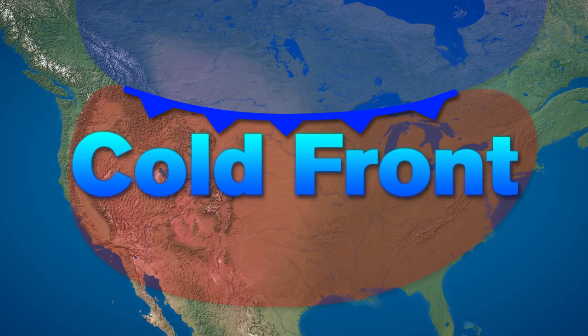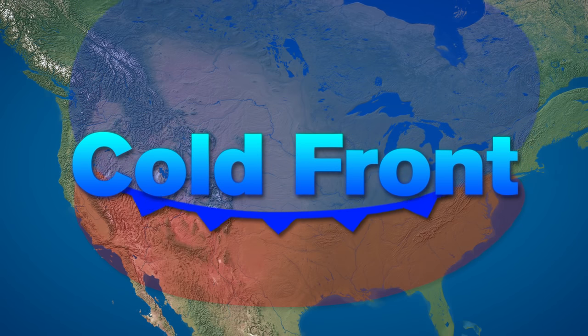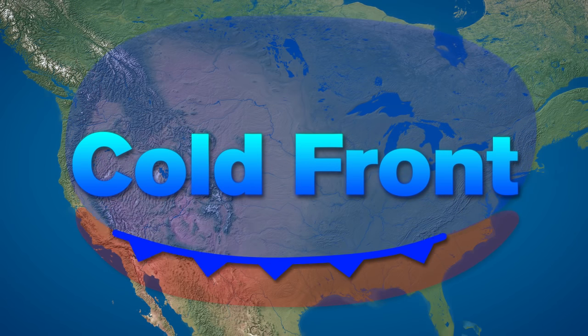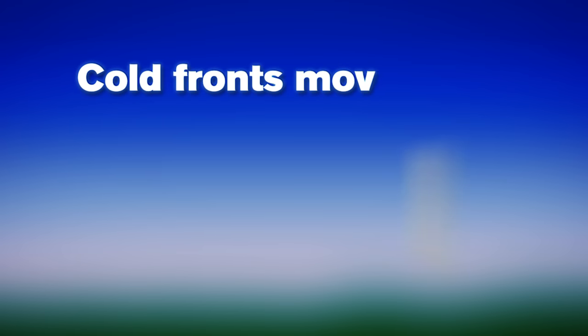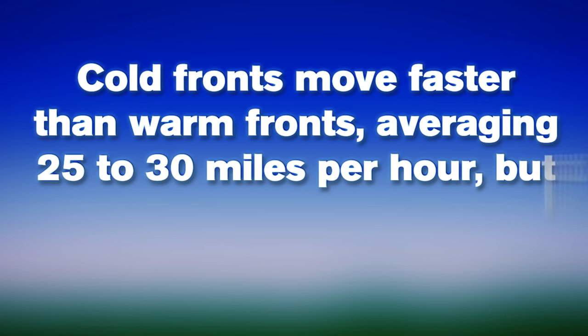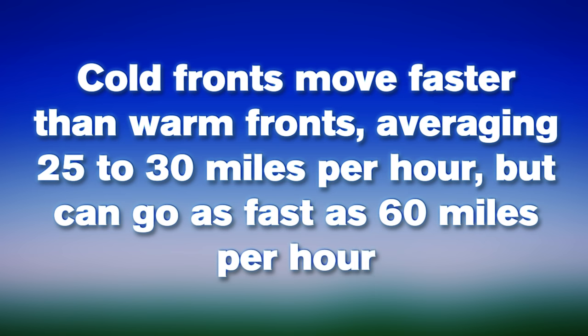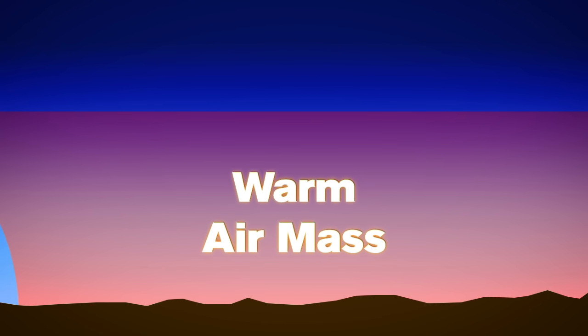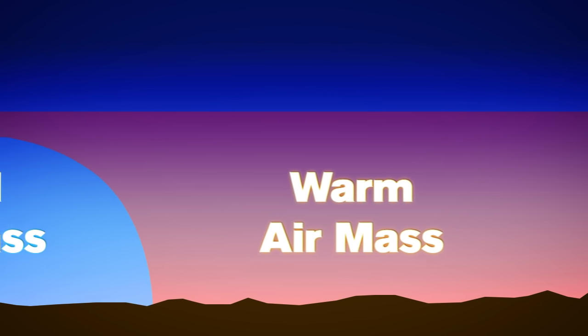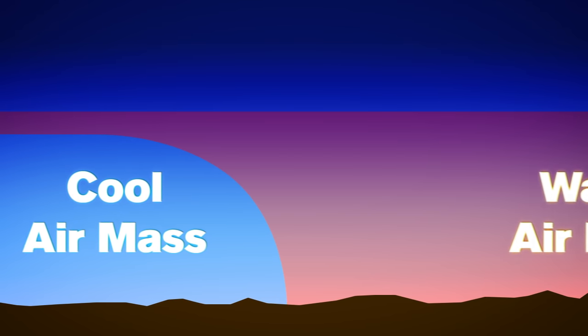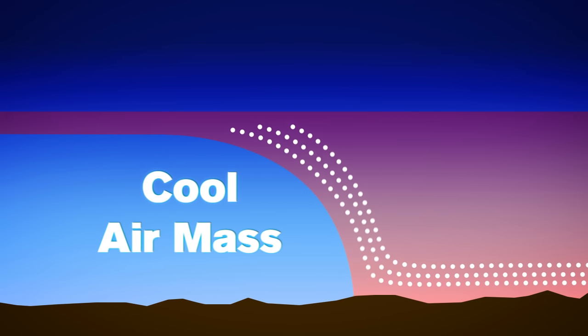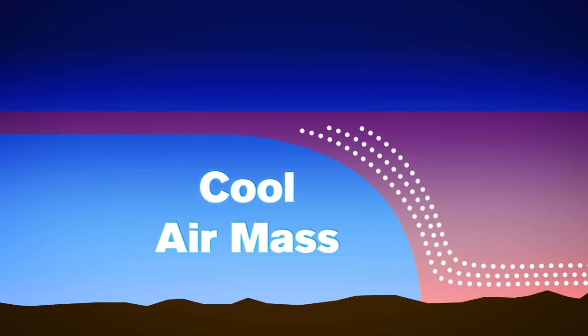A cold front occurs when cold, dense air overtakes warmer air. Cold fronts move faster than warm fronts, averaging 25 to 30 miles per hour, but can go as fast as 60 miles per hour. Cold fronts stay close to the ground and have a steeper angle than a warm front. They will move across the ground and lift existing air at a very rapid rate.